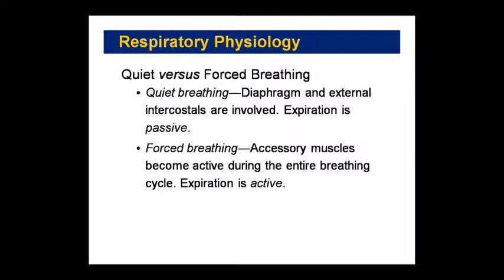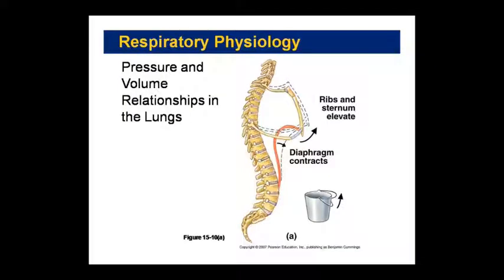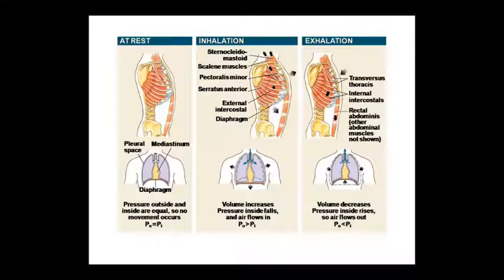Note: inspiration is the active process — make sure you correct that in your notes. Forced breathing is obviously an active process. Now, the relationship between pressure and volume in the lungs is shown with the vertebral column, illustrating how ribs and sternum elevate and the diaphragm contracts. When ribs and sternum elevate, the diaphragm contracts — like a bucket handle analogy where the handle goes up.